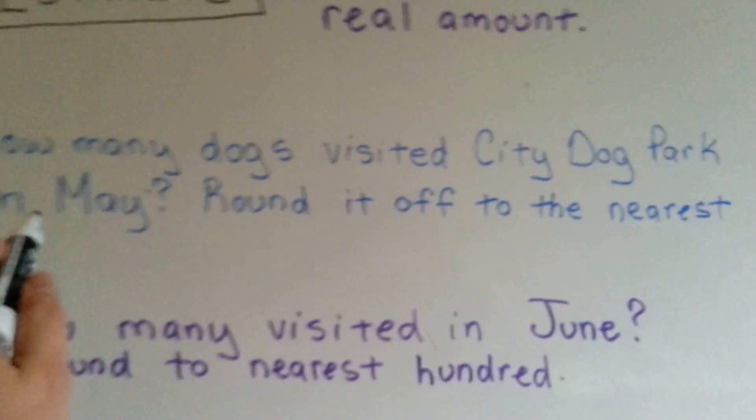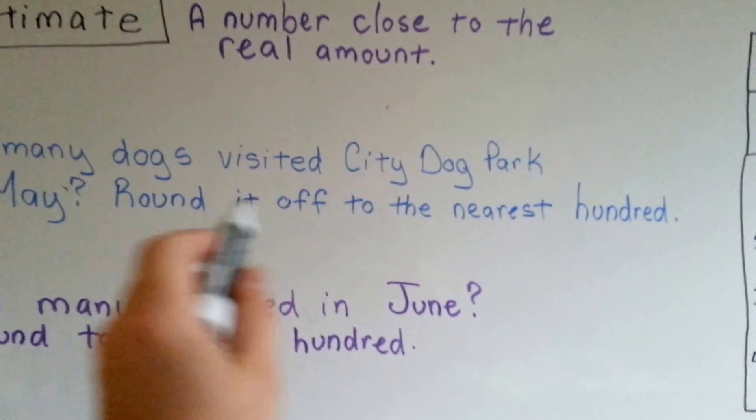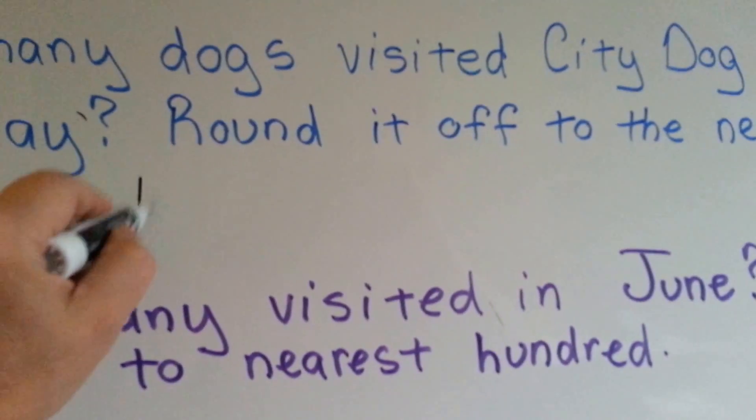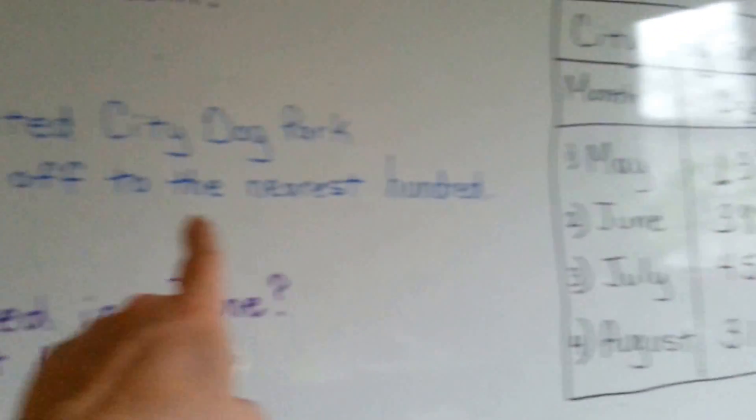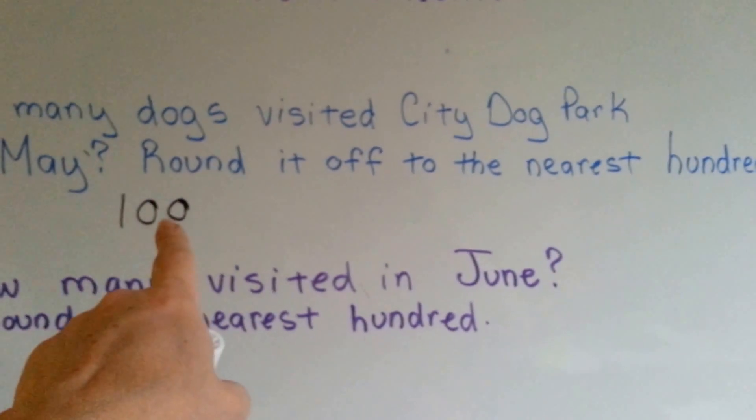So in May, the number of dogs that visited City Dog Park, rounded off to the nearest hundred, is 100. There was really 137, but rounded to the nearest hundred, it would be 100.